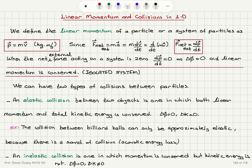An inelastic collision is one in which momentum is conserved but kinetic energy is not conserved. So we have the net external force acting on the system equal to zero, so that delta p = 0, but delta k is non-zero.